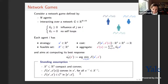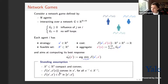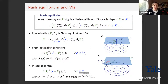Each agent has a strategy x_i selected in a feasible set X_i to minimize their cost, which is a function of their own action and the local network aggregate z_i(x) — the sum of the agent's neighbors' actions. Assumptions throughout the talk: X_i is a convex compact set, and the cost function is convex in my own strategy for all opponents' actions x_{-i}, and smooth, so that we can discuss gradients.